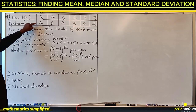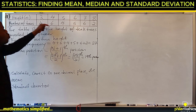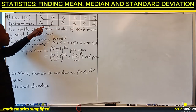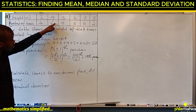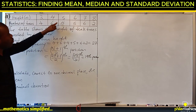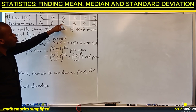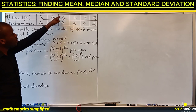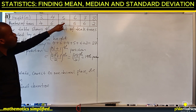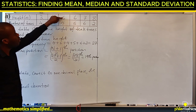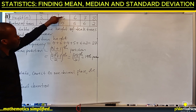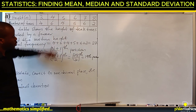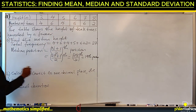To find the 14th position, we look at the cumulative frequency. Four plus six is ten, and ten plus four is fourteen. So the tree at the 14th position has a height of five.